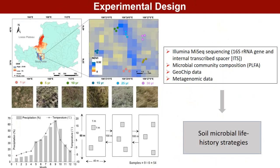Thus, we used soil 16S rRNA and internal transcribed spacer (ITS) gene sequencing to quantify the relative abundance, and metagenomic sequencing to analyze functional gene data to explain the shifts in microbial life history traits during long-term grassland restoration.